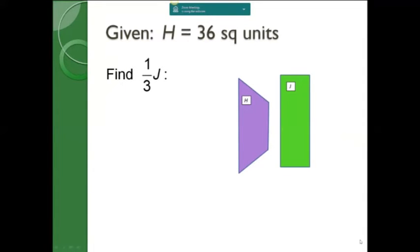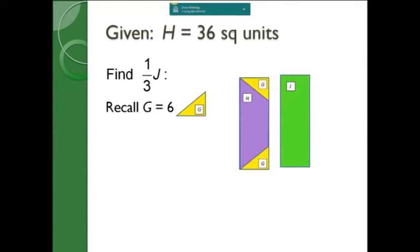After doing this, what if we wanted to find one third of J? Since we already know that H is 36 and we found that G equals 6, we could build a rectangle H and two G's that is exactly equal to J. And then substituting known values into this equation, we find that J is 48. And then one third J is equal to 16.